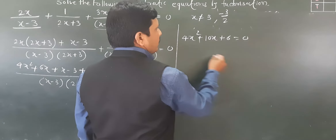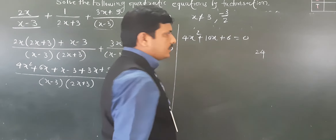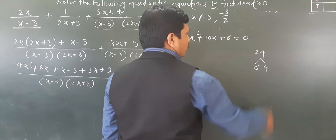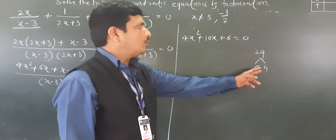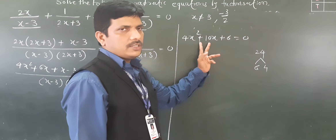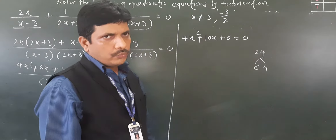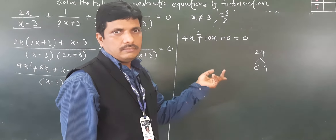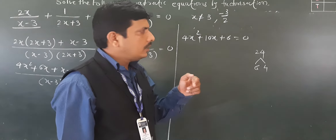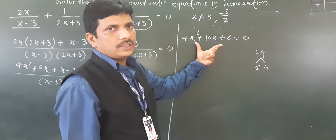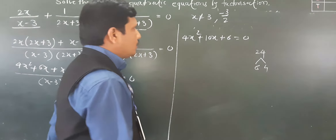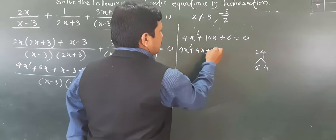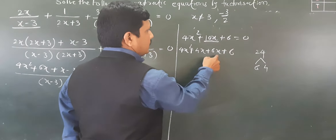To factorize 4x² + 10x + 6: multiply 6 × 4 = 24. We need factors of 24 whose sum is 10. The factors 6 and 4 work since 6 × 4 = 24 and 6 + 4 = 10. So we split the middle term: 4x² + 4x + 6x + 6 = 0. Taking 4x common from the first two terms gives 4x(x + 1), and taking 6 common from the last two gives 6(x + 1).